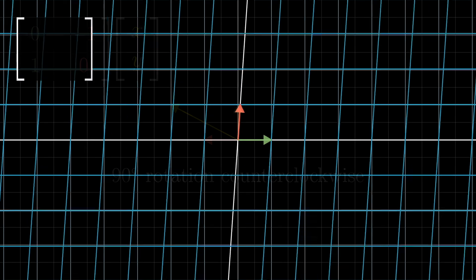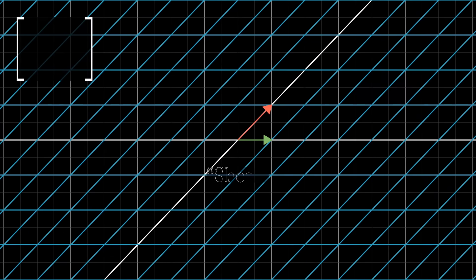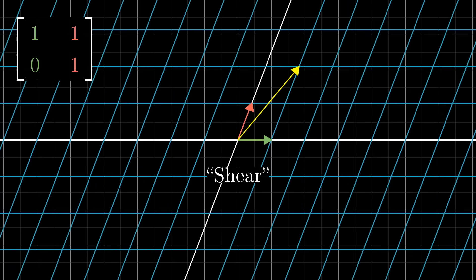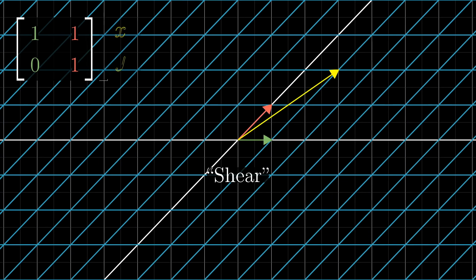Here's a fun transformation with a special name, called a shear. In it, i-hat remains fixed, so the first column of the matrix is (1, 0), but j-hat moves over to the coordinates (1, 1), which become the second column of the matrix. And at the risk of being redundant here, figuring out how a shear transforms a given vector comes down to multiplying this matrix by that vector.